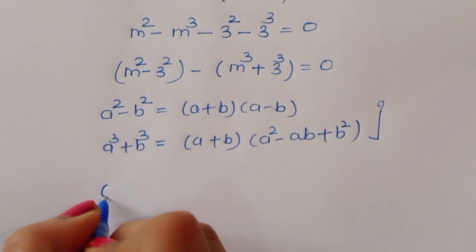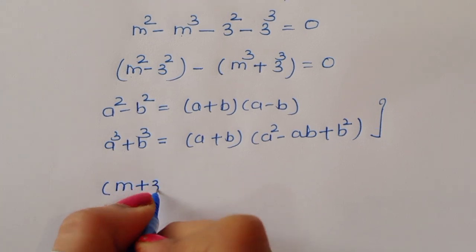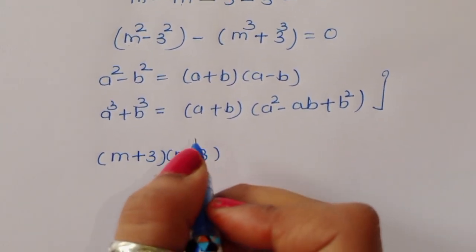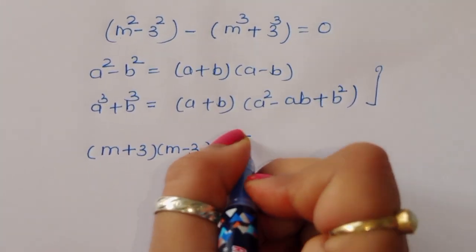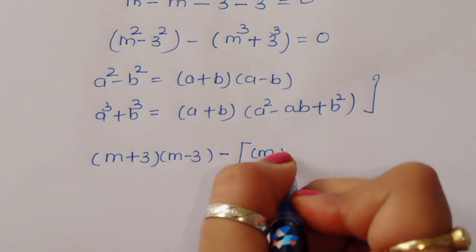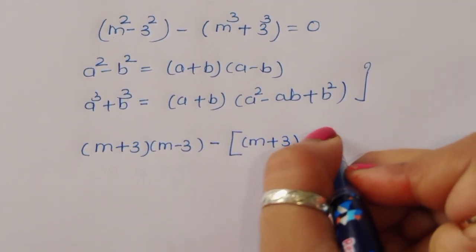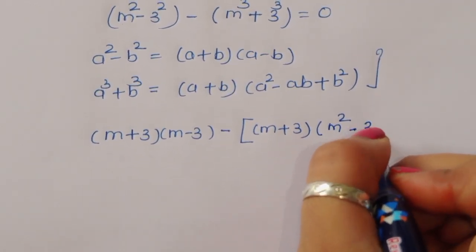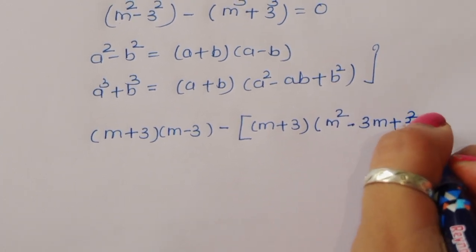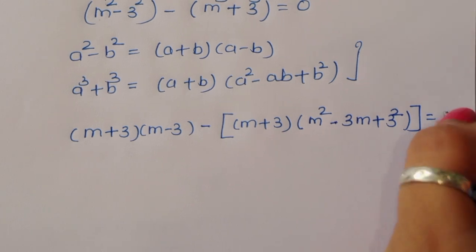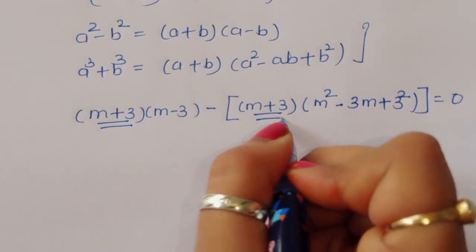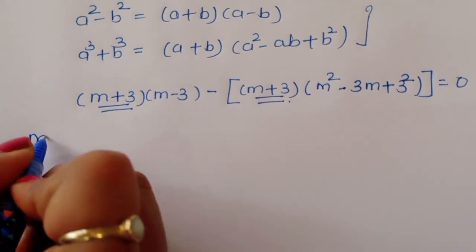For m squared minus 3 squared, that gives us (m plus 3)(m minus 3). And for the m cubed plus 3 cubed part, using the formula we get (m plus 3)(m squared minus 3m plus 3 squared), which is (m plus 3)(m squared minus 3m plus 9).